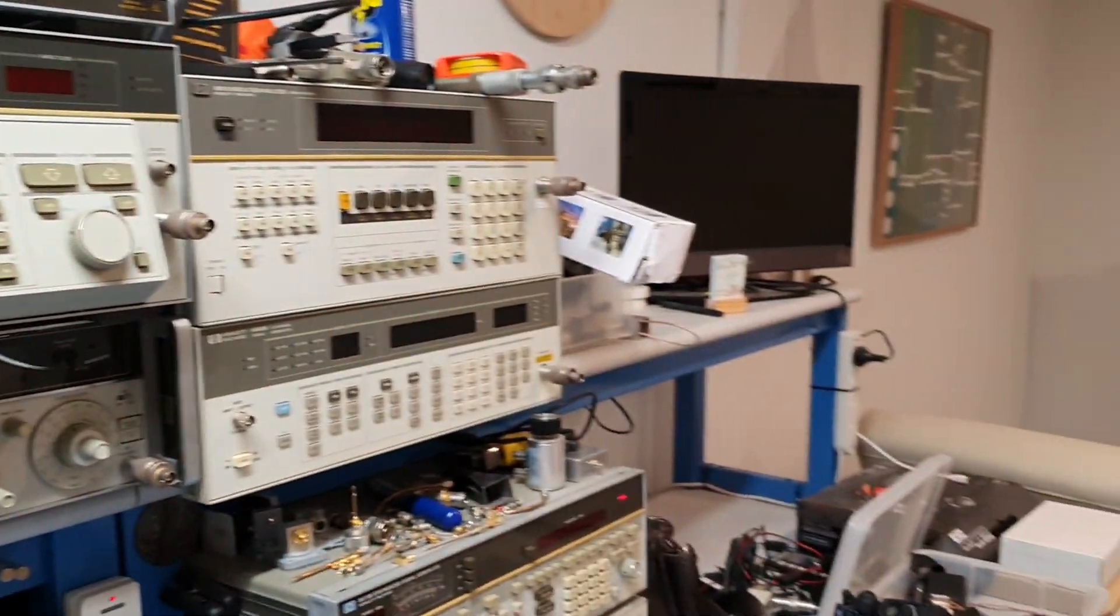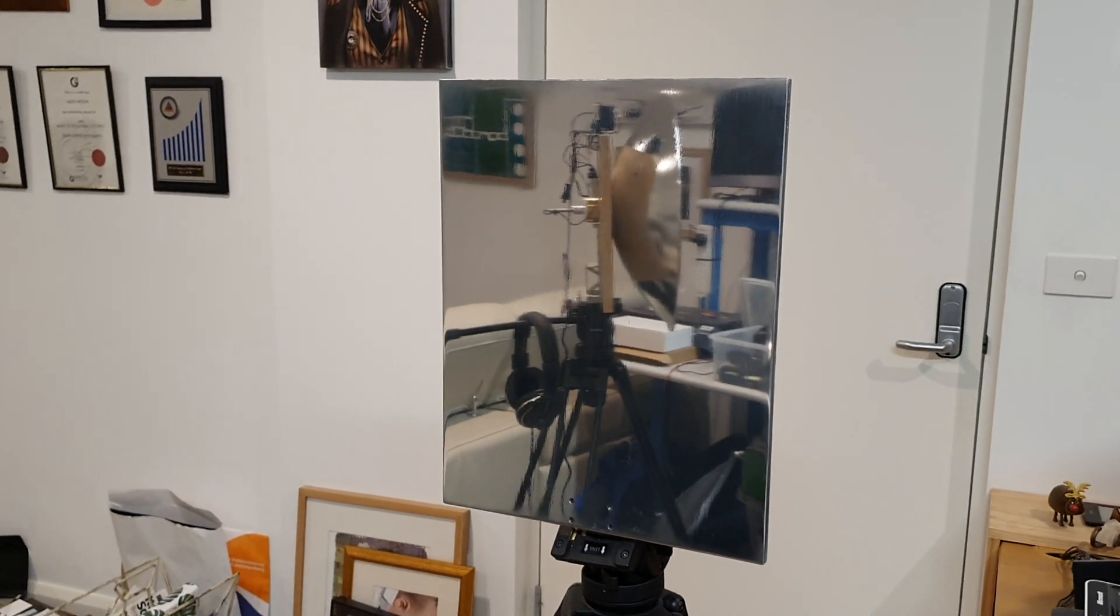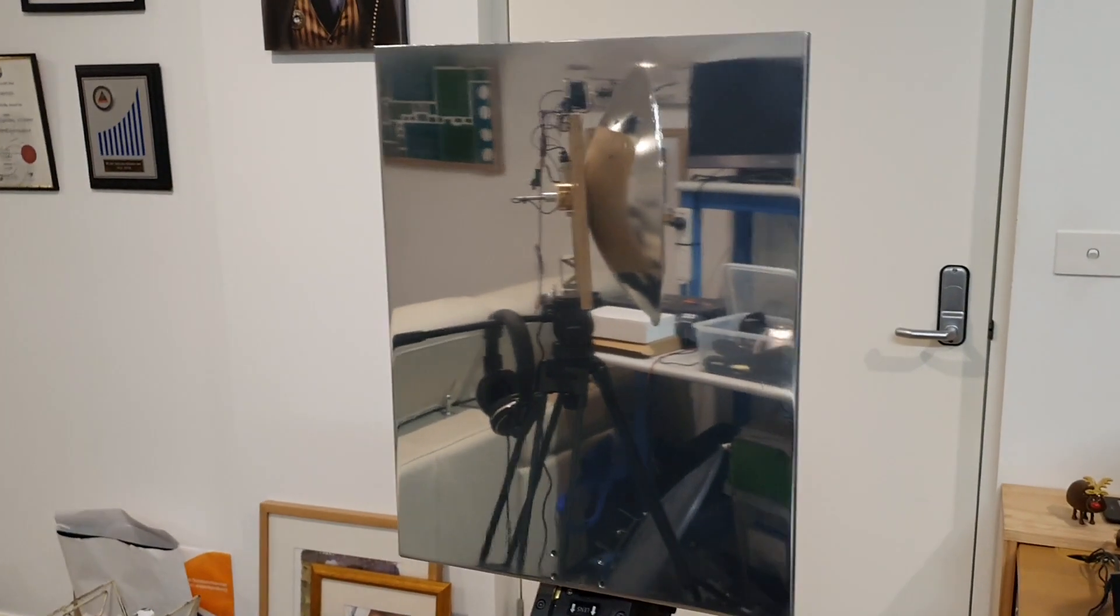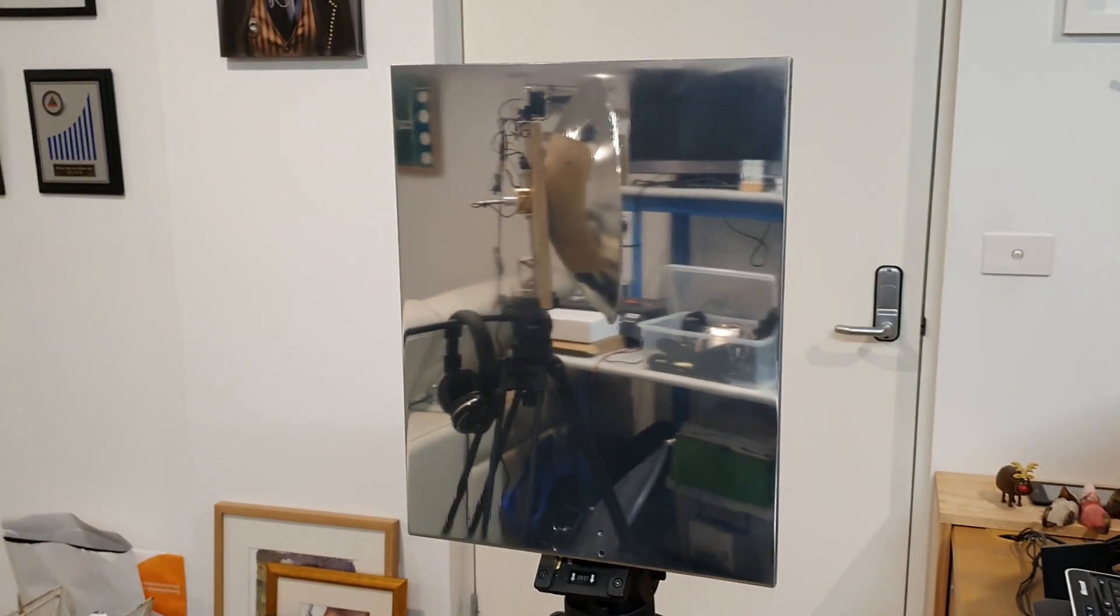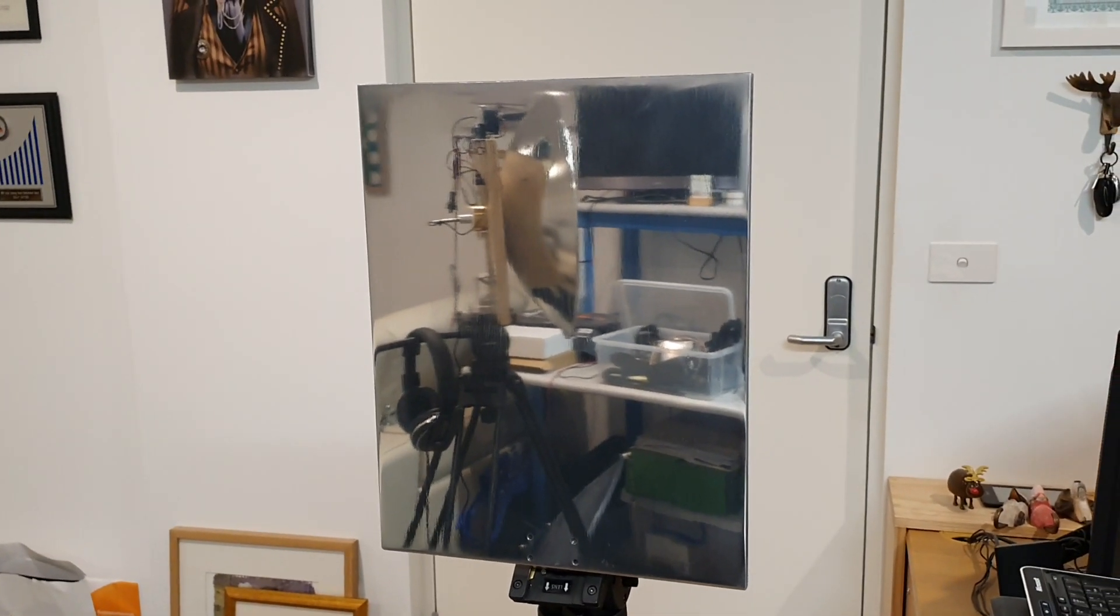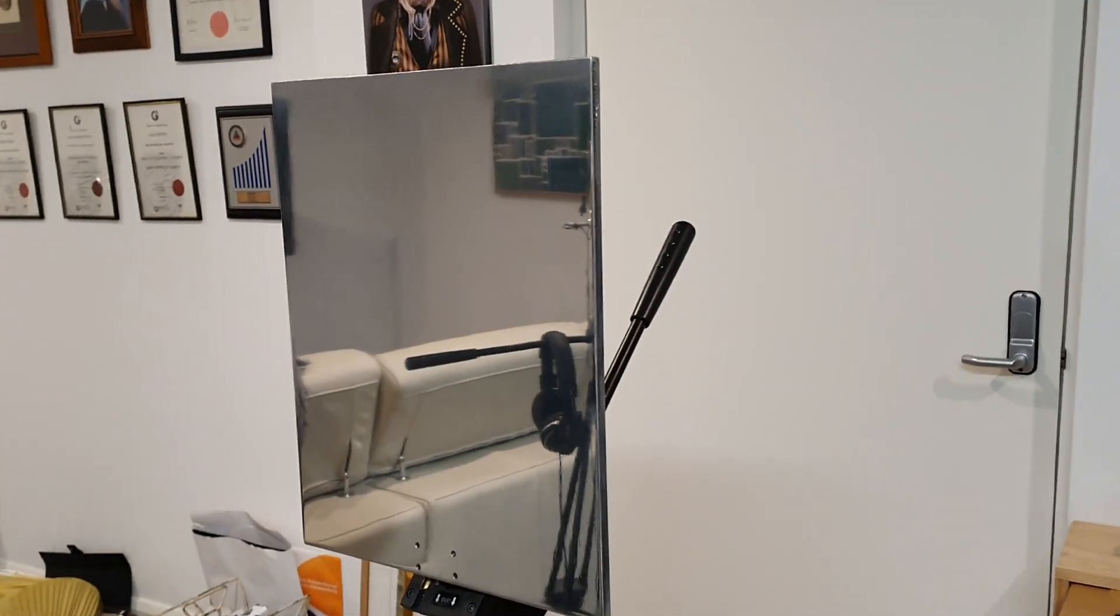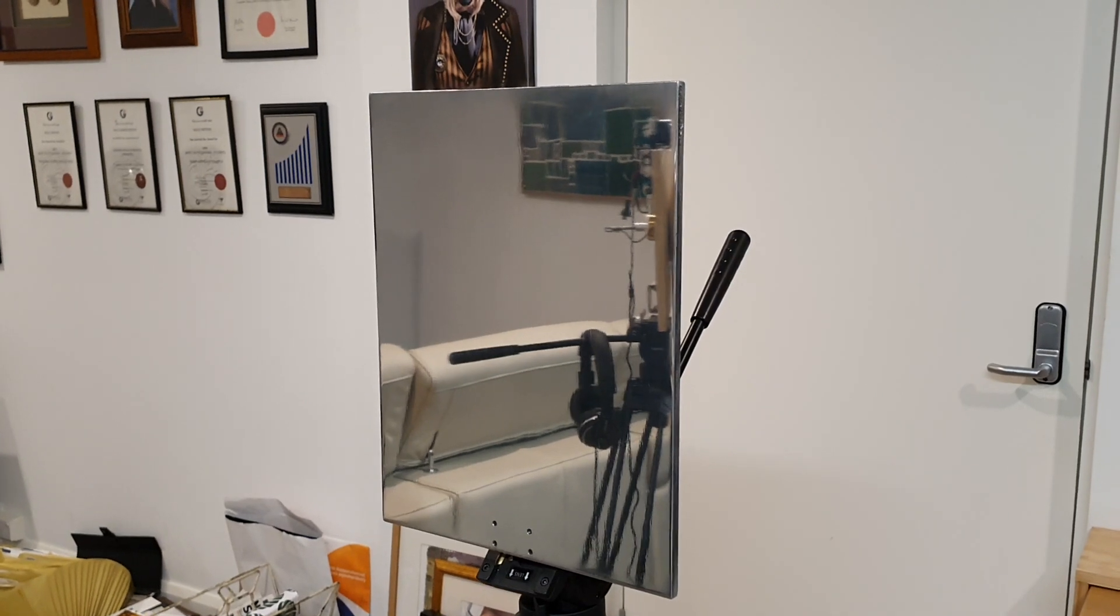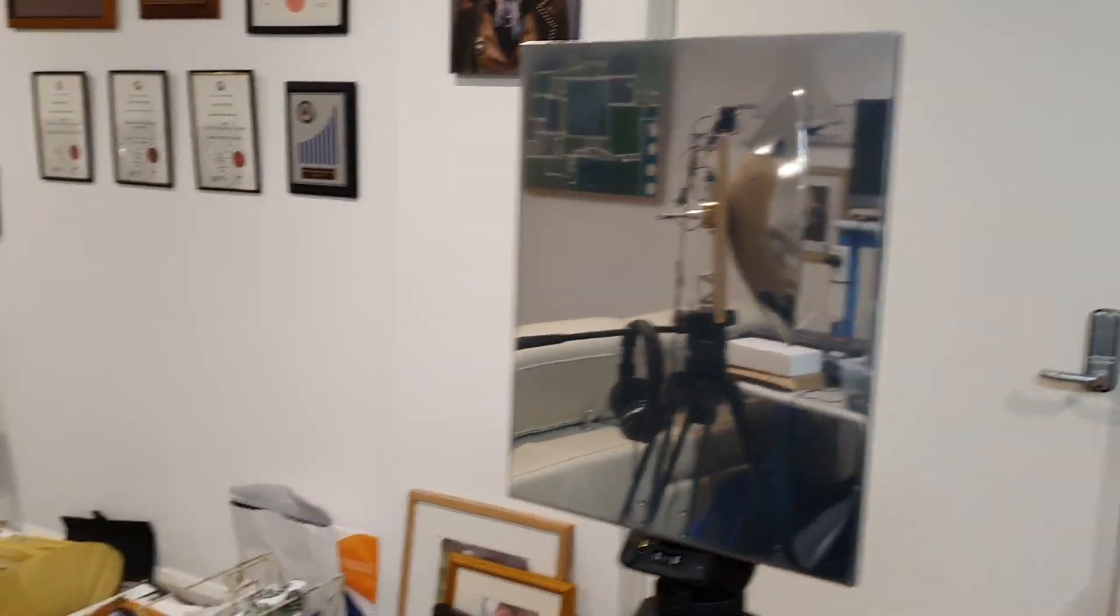Now the other thing I've set up here today is a different method of modulation which is using a secondary reflector or a heliograph. We call it a heliograph when we're using the sun as a transmitter, and we're able to move this reflector which is just a polished piece of aluminium in and out of the correct optical path between the transmitter and receiver and we will be able to modulate the device.